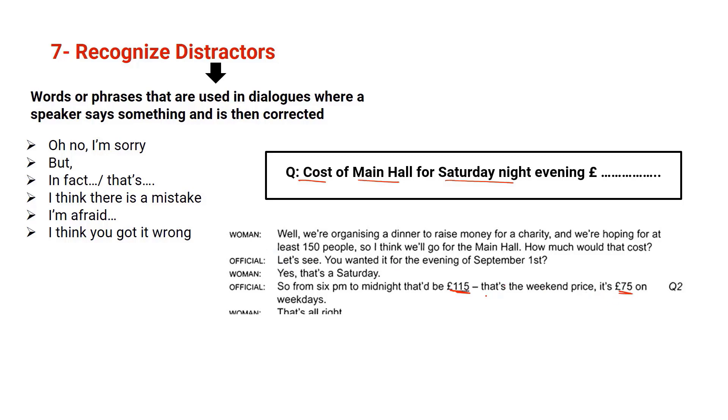So here we have two numbers to distract you: 115 and 75. So we have to listen carefully and search for the distractor, and we have that set that clarifies which number to choose. So from 6 p.m. to midnight that would be 115, that's the weekend price. So this is weekend, and here he's talking about Saturday, which is a weekend. It's 75 on weekdays. In the question we don't need the weekdays, we talk about the weekend, which is Saturday. So the correct number here is 115 pounds. And that's it for distractors. I believe we just need to learn how to spot the distractor itself, and then it will be easy to pick the correct answer.